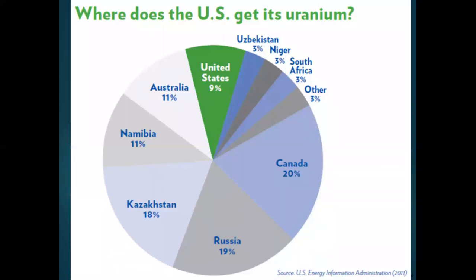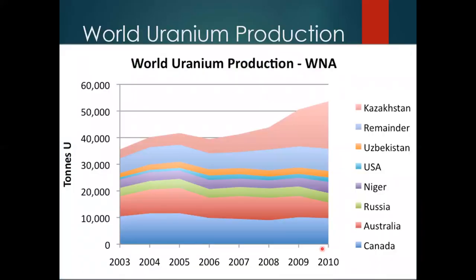I wanted to give you an idea about where the United States gets its uranium and what countries are increasing their uranium production. We do have a domestic supply, but about 40% comes from Russian bloc countries — Uzbekistan, Kazakhstan, and Russia. And when we look at the next slide, the country that's really increasing its uranium production worldwide is Kazakhstan.